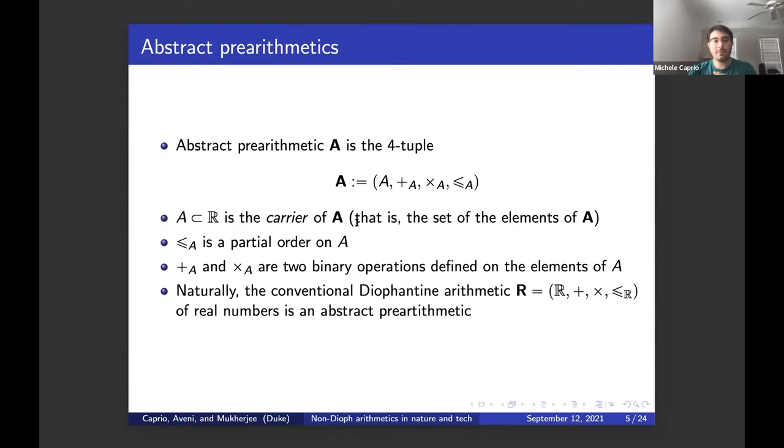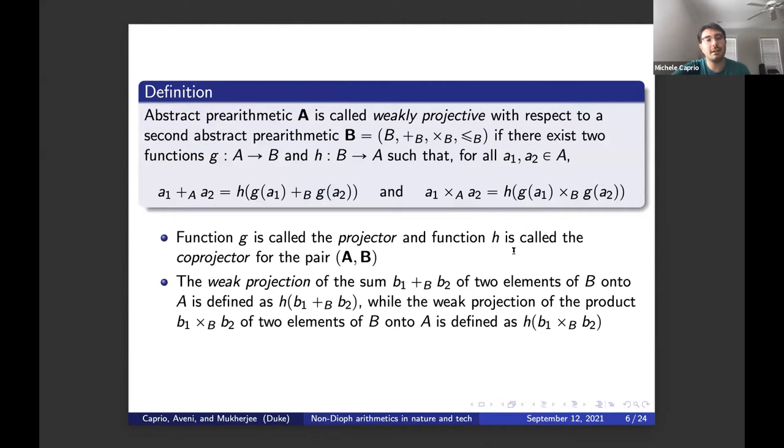Let's start with what abstract pre-arithmetics are. An abstract pre-arithmetic is a four-tuple. Set A is the carrier of the abstract pre-arithmetic, that is the set of the elements. Then we have a partial order defined on A, and plus A and times A are two binary operations defined on the elements of A. We call them addition and multiplication, but they can be whichever binary operation the scholar needs. The conventional Diophantine arithmetic on the reals is an abstract pre-arithmetic.